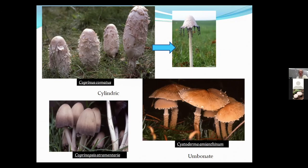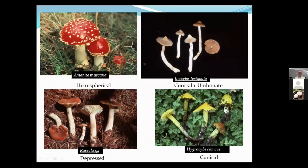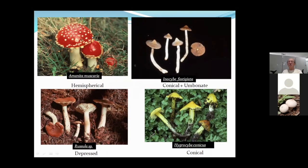Cystoderma amianthinum has a little pointy thing right in the middle of the cap — that's called umbonate. Amanita muscaria is hemispherical and very common in Colorado. Some caps are conical and umbonate, like Inocybe species; others are depressed; others conical like Hygrocybe conica. You really get a sense of these different cap shapes.